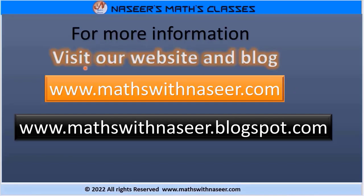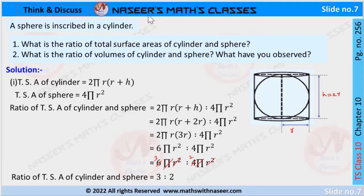For more information, visit our website and blog www.mathswithnaseed.com. Now we are going to solve Think and Discuss, page number 256, chapter 10 mensuration. A sphere is inscribed in a cylinder. What is the ratio of the total surface area of the cylinder and sphere?